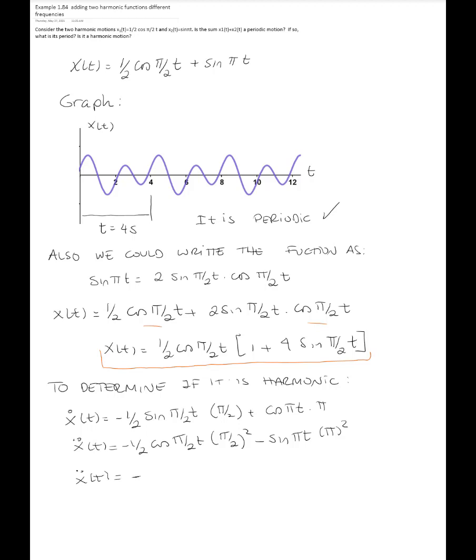I can write this expression as pi squared times the quantity one eighth cosine of pi over two t plus sine of pi t. As you can see, this expression in the bracket is not exactly the same as the original function because we have this one eighth.